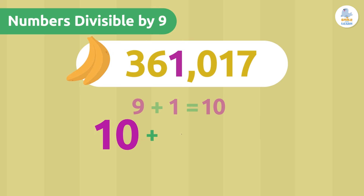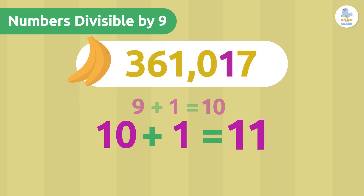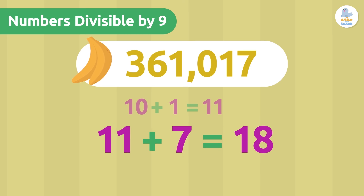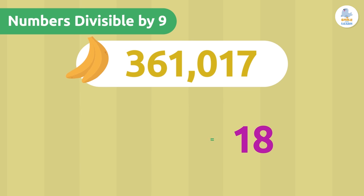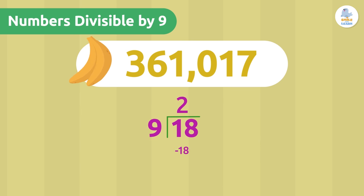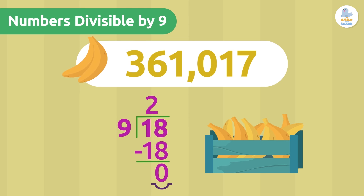Continuing: 10 plus 1 is 11, and 11 plus 7 is 18. Now we'll do the division. Since the remainder is 0, 18 is divisible by 9, and so is the number of bananas. That means we won't have any bananas left over when we put them in the boxes!